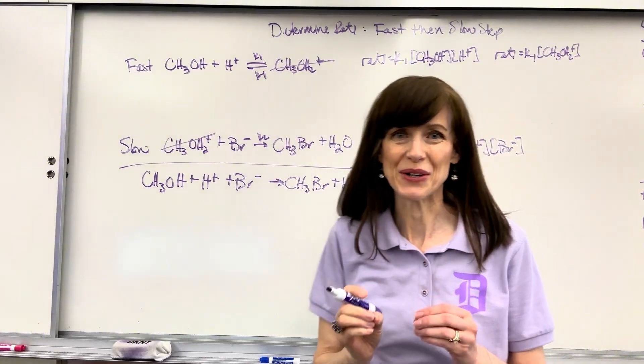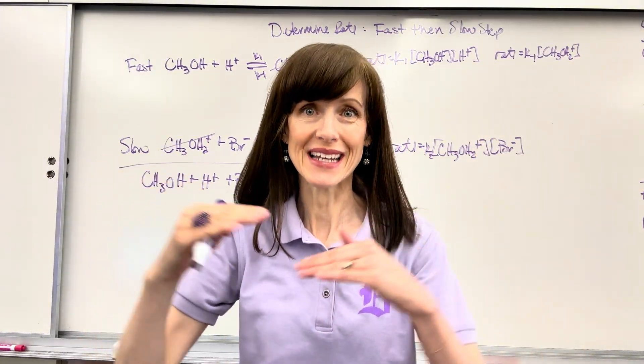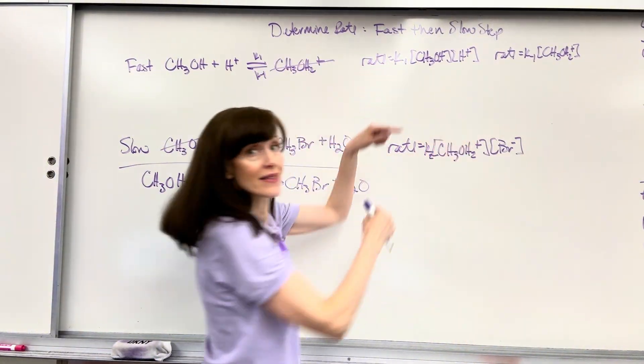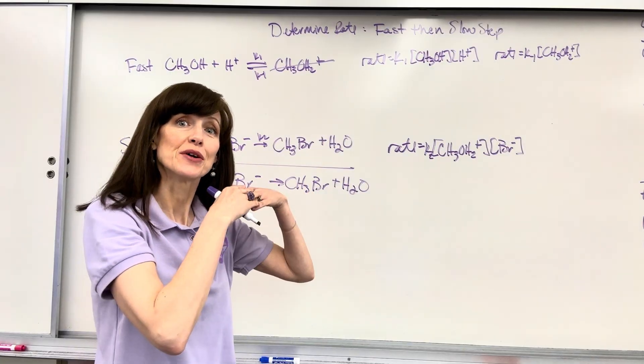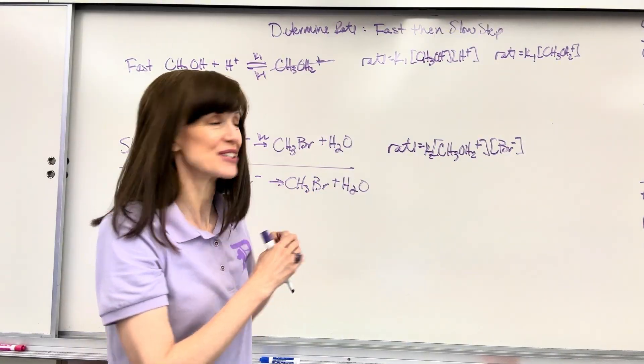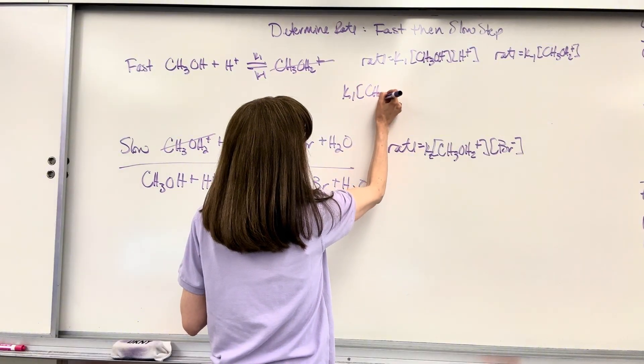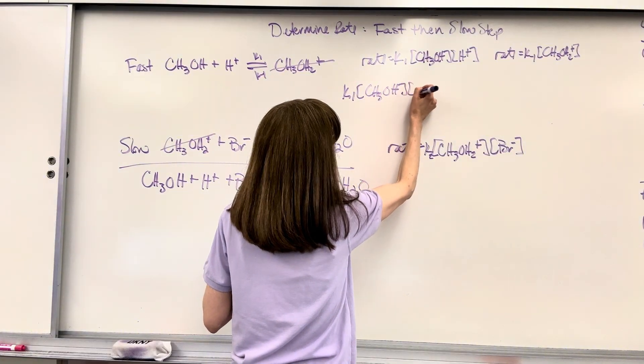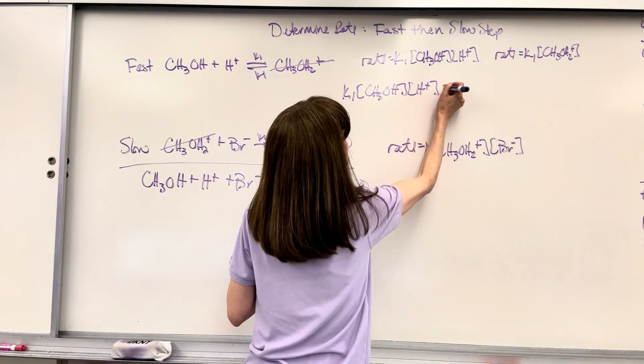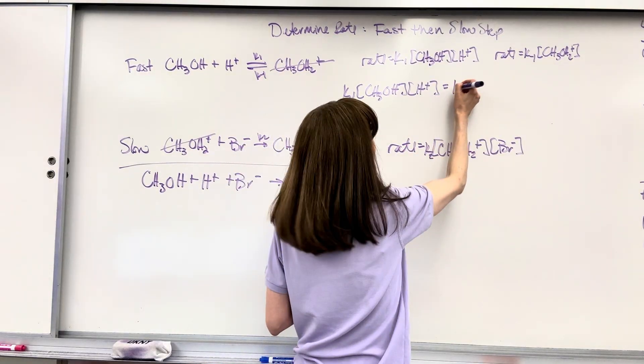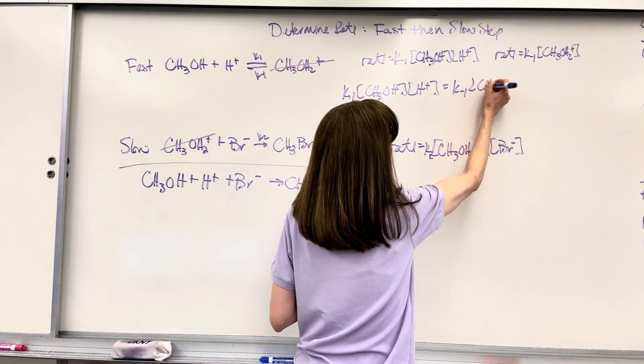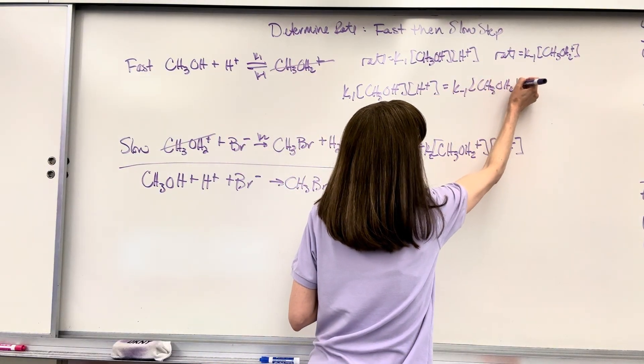At equilibrium, rates are equal. So those two rates are the same. I can set the rate laws equal to each other. We get K1 times CH3OH times H+ equals K-1 times CH3OH2+.